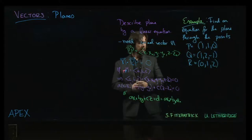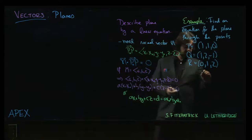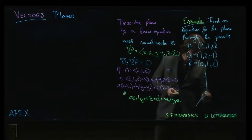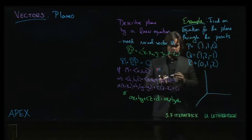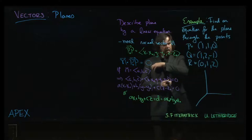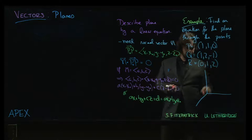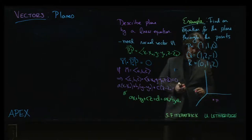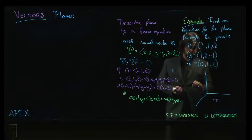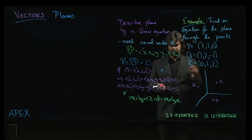So next we're going to look at an example, and in this case we're given three points. Now I'm not going to try to actually plot these accurately, but there's P, Q, R - let's pretend that those are the points.